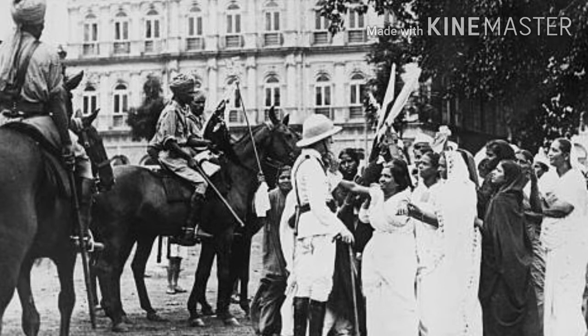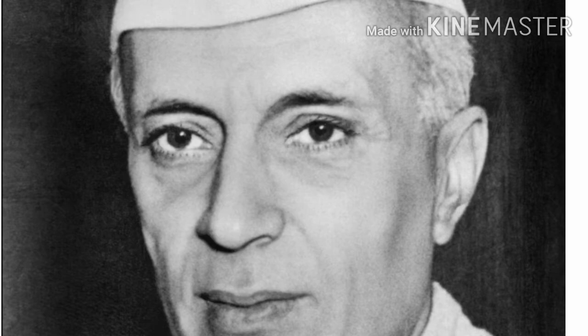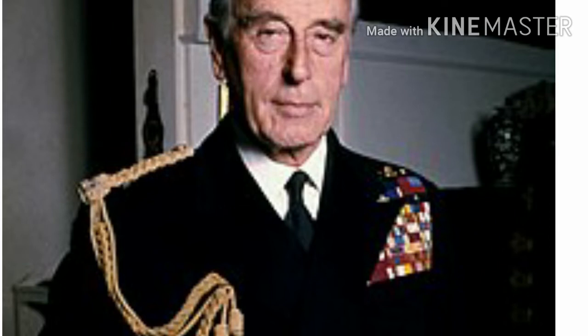On June 15, 1947, the British House of Commons passed the Indian Independence Act, also known as the Mountbatten Plan, which divided India into two dominions — India and Pakistan. The Indian Independence Act, passed by the Parliament of the United Kingdom, partitioned British India into two new independent dominions. Pandit Jawaharlal Nehru became the first Prime Minister of India. Lord Mountbatten was the last British Governor General, and Sir Rajagopalachari was the first Indian Governor General.